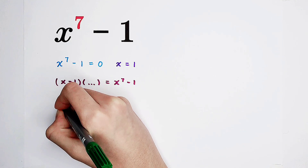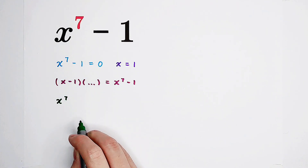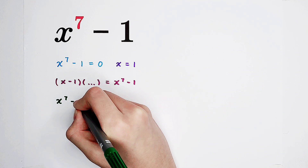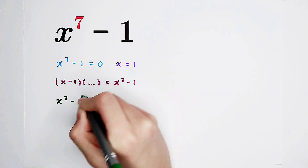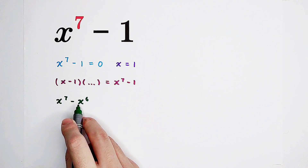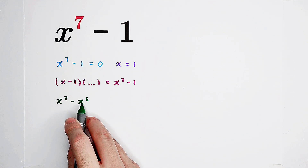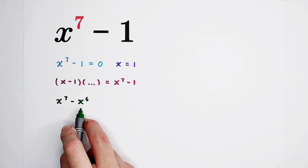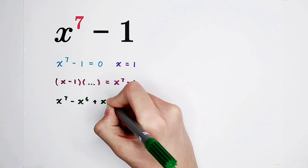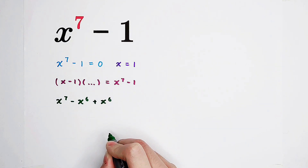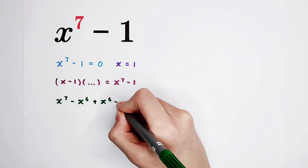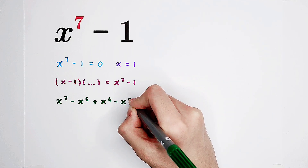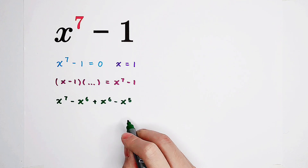Now we have x to the power of 7. If we want to get x minus 1 as a factor, we have to subtract x to the power of 6 from x to the power of 7. Therefore we can take out x to the power of 6, and in the bracket the factor will be x minus 1. However, there isn't any x to the power of 6 here, so we have to add it back: plus x to the power of 6. For the same reason, we want to get the factor x minus 1, so we have to subtract x to the power of 5.